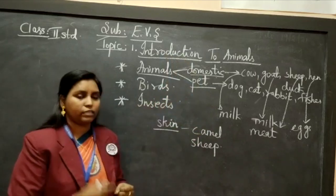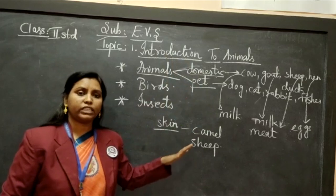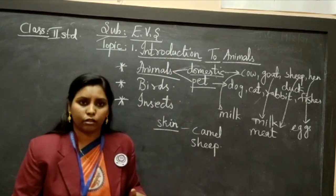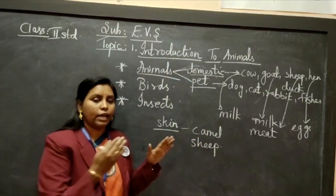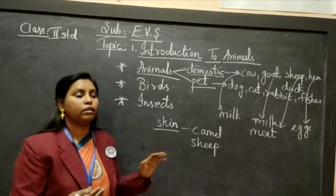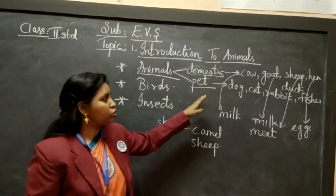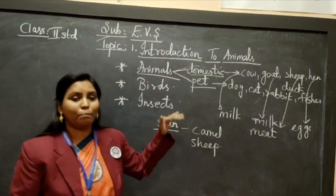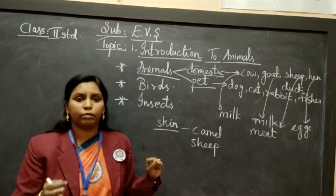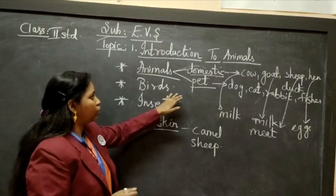We have also come across pet animals — that is the dog, cat, rabbit, and fishes. These are kept at home for pleasure. They act as a friend, they are like a friend to us. These are called pet animals. We don't keep them for any other purpose.